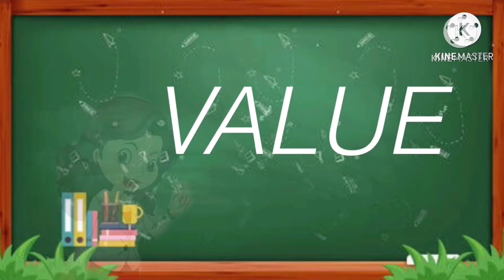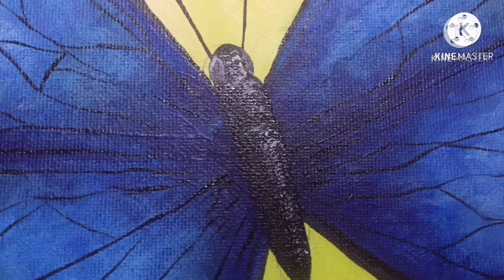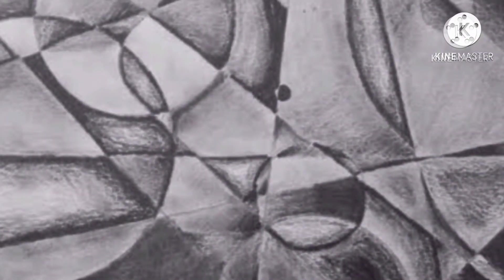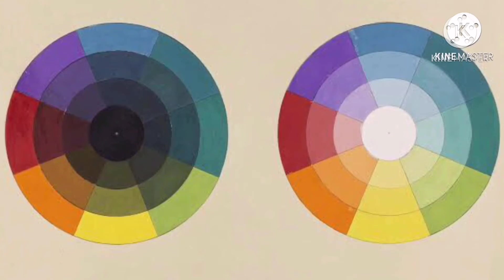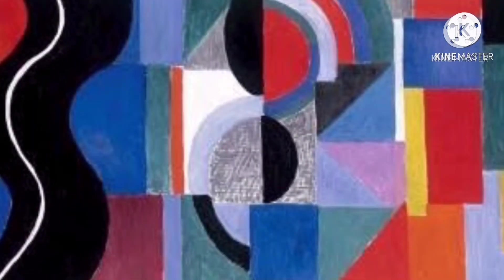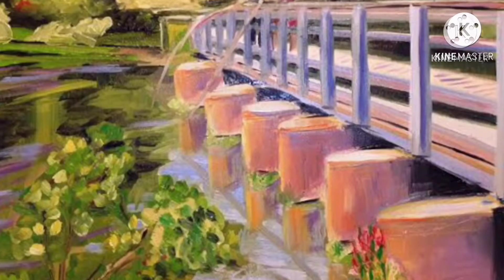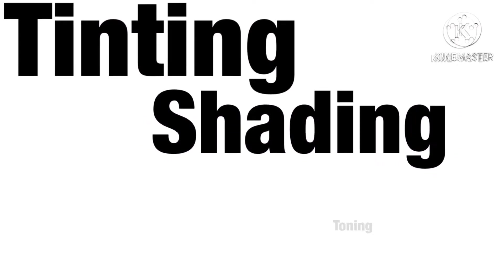Another element of art is value. Value is how light or dark a color looks. It is used to make an object appear three-dimensional. The value scale shows you the range from white to black. Tint is a color mixed with white — for example, red becomes pink and blue becomes light blue. Shade is a color mixed with black. Tone is also present in value, as tone is produced by mixing a color with gray. You can change the value of a color through tinting, shading, and toning.